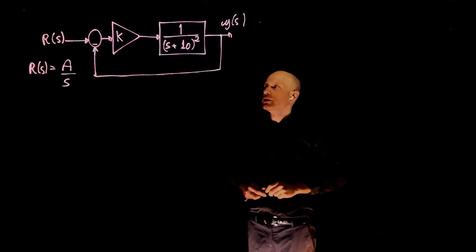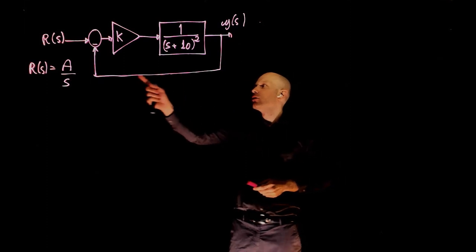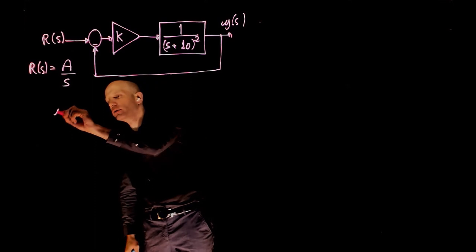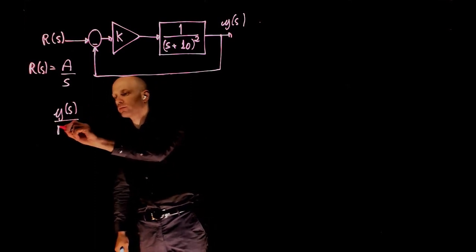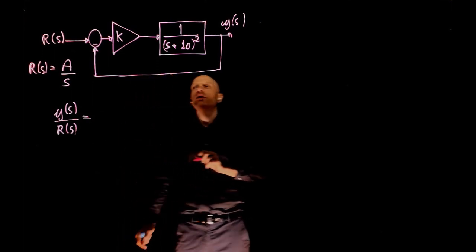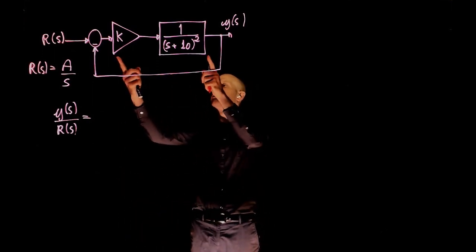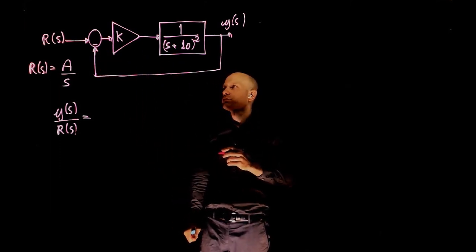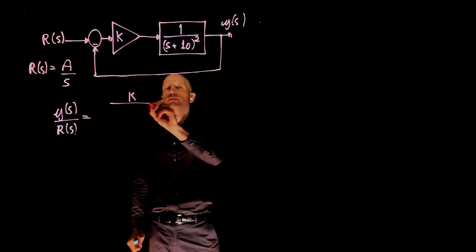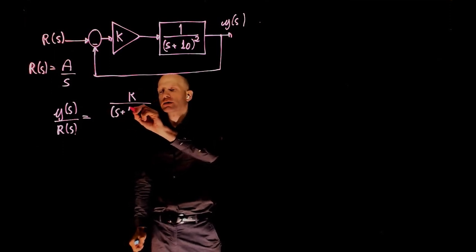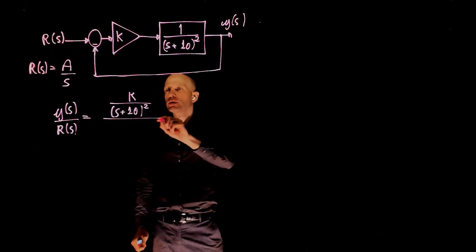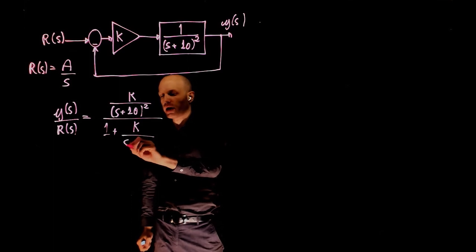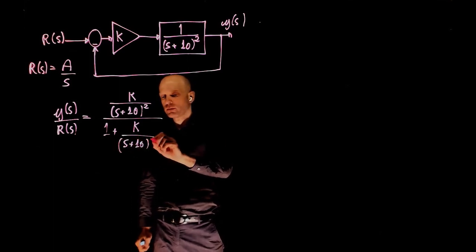In order to calculate this steady state error, we need to first find the transfer function y over r. It's very simple. We have the main line function here, divided by 1 plus, because of the negative sign, line function. So we have k over s plus 10 squared, divided by 1 plus k over s plus 10 squared.